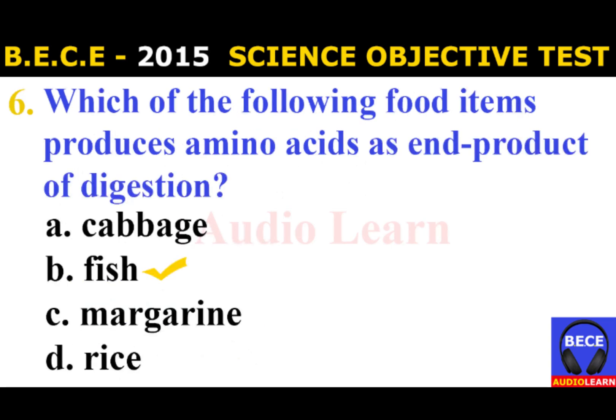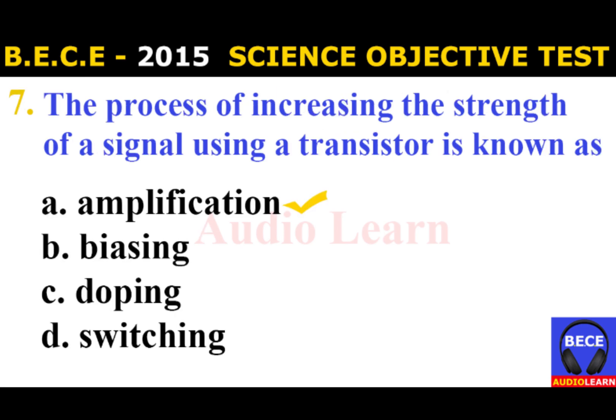Number 6: Which of the following food items produces amino acids as end product of digestion? A. Cabbage, B. Fish, C. Margarine, D. Rice. The answer is B. Fish. Fish produces amino acids as the end product of digestion.